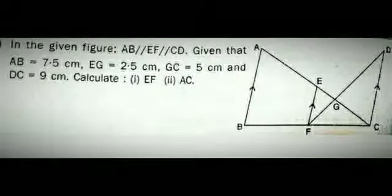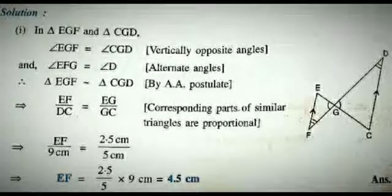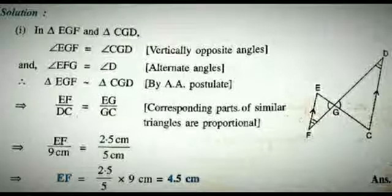Here is a problem. In the given figure, AB is parallel to EF, parallel to CD. Given AB equals 7.5 cm, EG equals 2.5 cm, GC equals 5 cm, and DC equals 9 cm. Calculate EF and AC. For EF, take triangles EGF and GDC and prove them similar using vertical opposite and interior alternate angles. From the proportion EF by DC equals GE by GC, substituting: EF by 9 equals 2.5 by 5, giving EF equal to 4.5 cm.